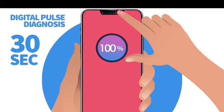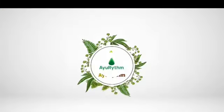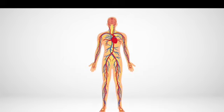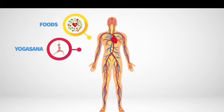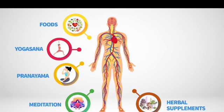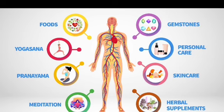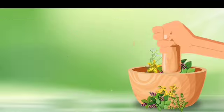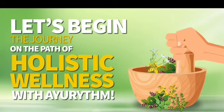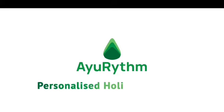This method is simple and repeatable. Ayurveda finds both your Vikrati and Prakriti and suggests ways to balance it by recommending food, yogasana, pranayama, meditation, herbal supplements, skin care, personal care, and gemstones to use as well as avoid. Let's begin the journey on the path of holistic wellness with Ayurveda — personalised holistic wellness.